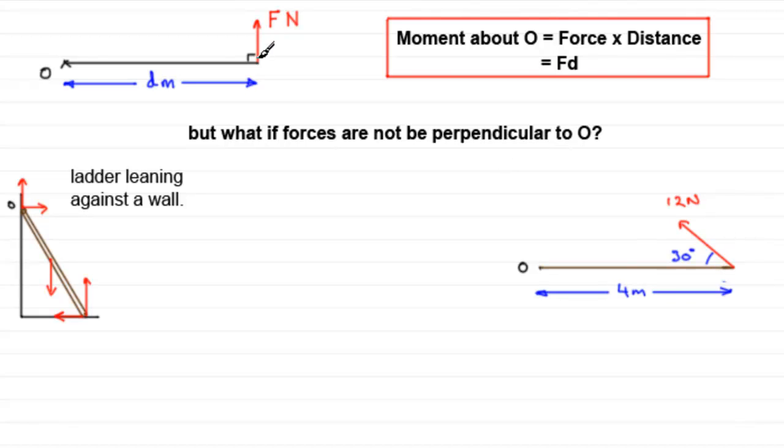So how do we do this? Because it's not perpendicular to the line here. Well, what we can do is split this into two components. And I'm assuming you're familiar with resolving a force, splitting it into two components. We can take this force and split it into a force in this direction perpendicular to the rod, and one in this direction along the rod towards O.